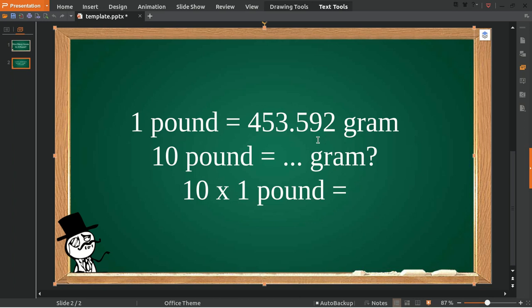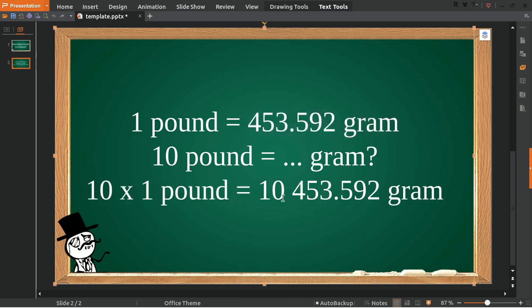And then because we have 10 on the left, we must have 10 on the right as well. And then we multiply it again with the basic formula on the right side in grams. So 10 multiplied with...